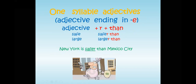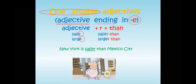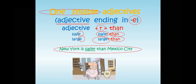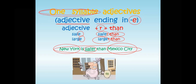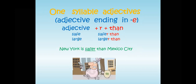Here is another one-syllable example with a different rule. When the adjective ends in -E, you only add -R. For example: 'safe' becomes 'safer', 'large' becomes 'larger', and you always use 'than'. Example: New York is safer than Mexico. Mexico City is larger than... Remember, this is still about one-syllable adjectives.